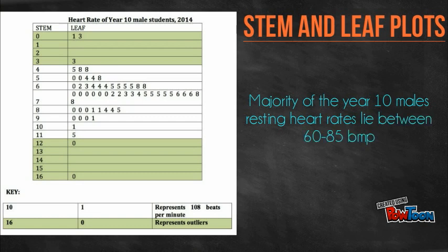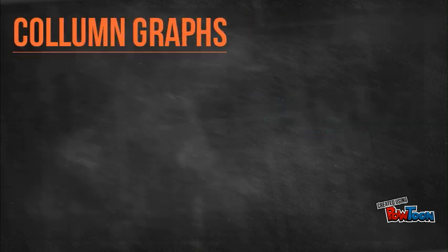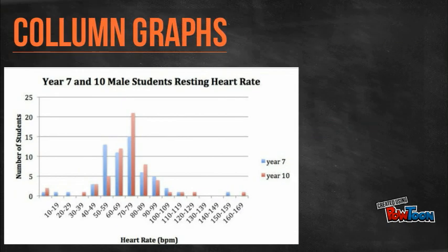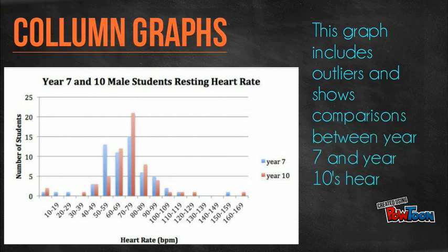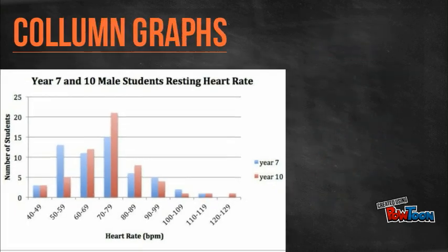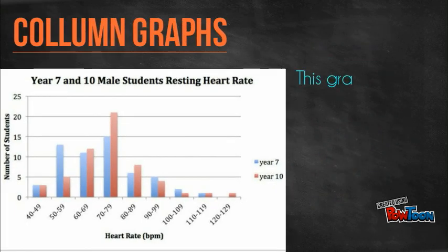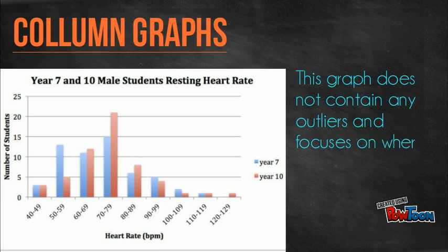For both graphs, outliers have been highlighted in green. This bar graph combines both sets of data in contrasting colours for comparison. The data on this graph includes the outliers of both years. This second graph is the same just without the outliers, making it clearer to interpret.